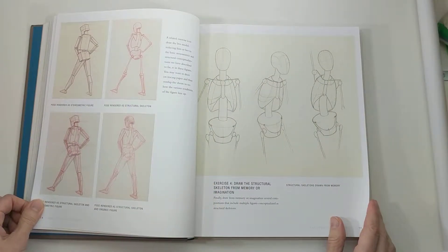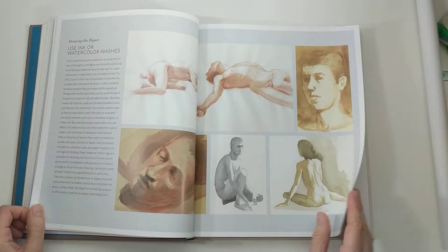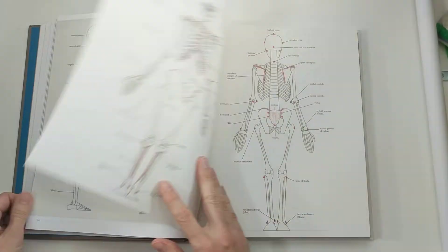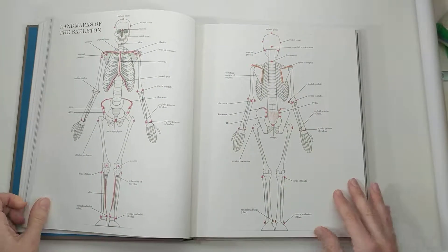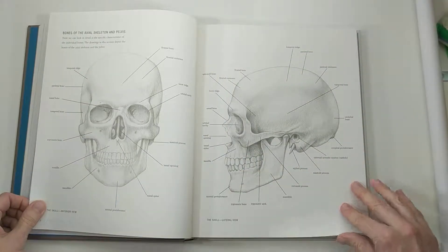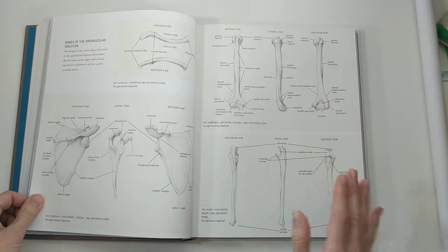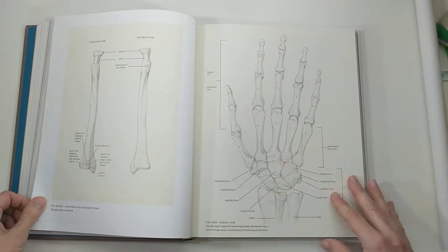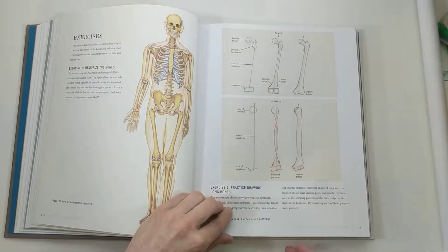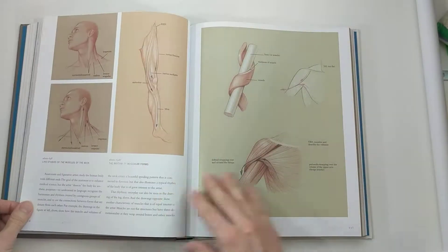He also has a course on a website called blueprint.com, and it corresponds to this book. He goes through, there's a bunch of half an hour videos where he goes through how to draw the human figure, how to measure it, and it's a great companion to this book because a lot of the illustrations are in this book that he refers to in the videos.